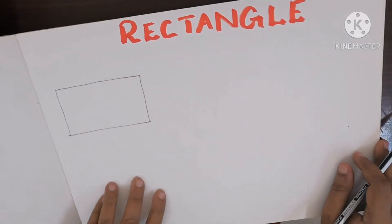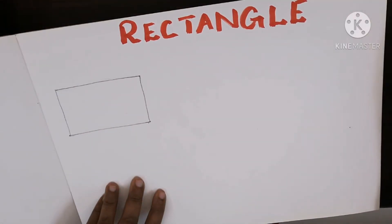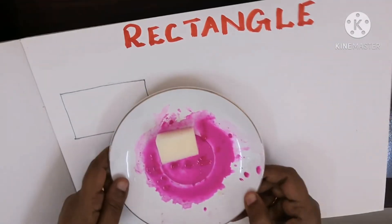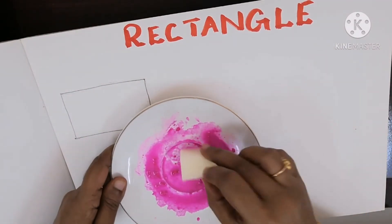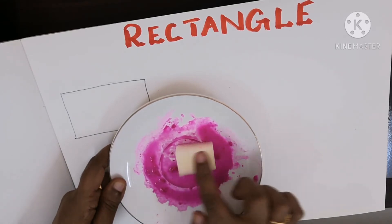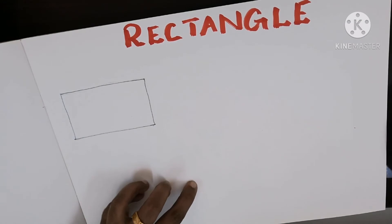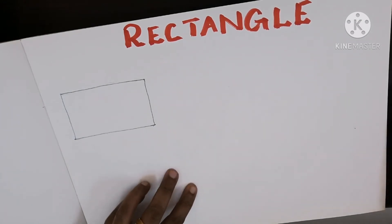For that, teacher took watercolor, pink watercolor and sponge. What is the shape of this sponge? This is rectangle in shape. So we will take the impression of rectangle.